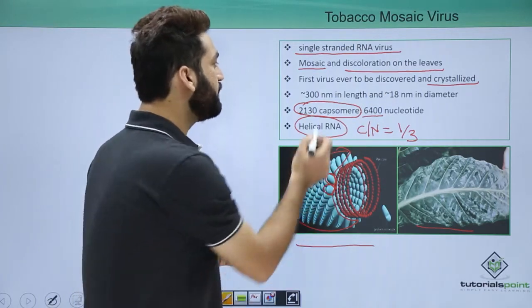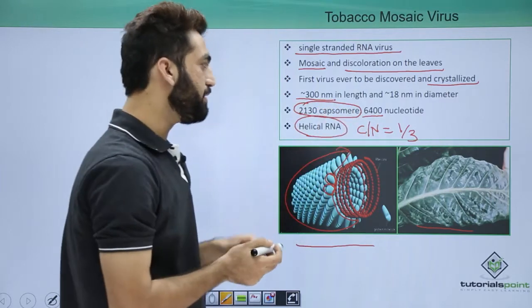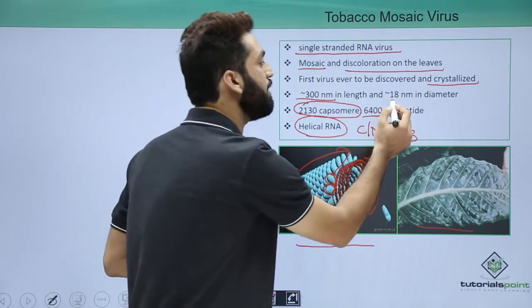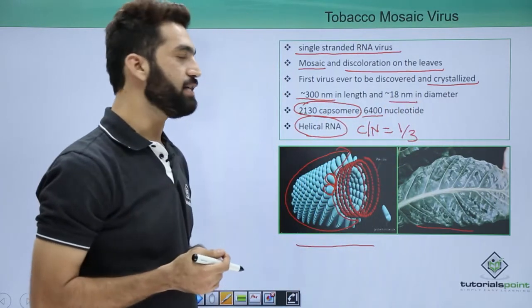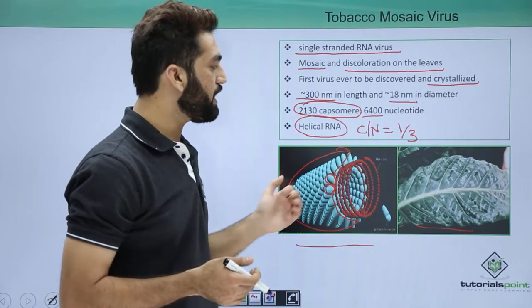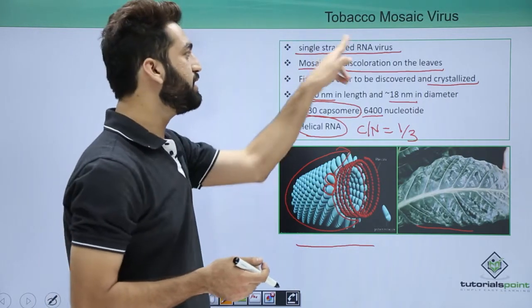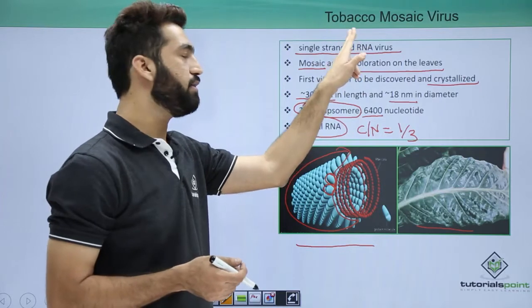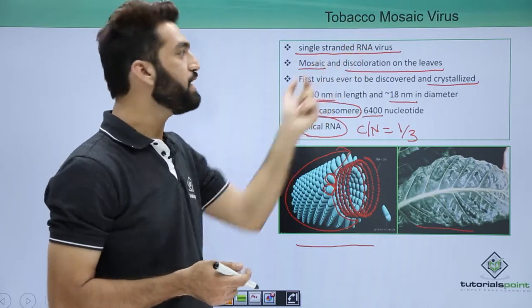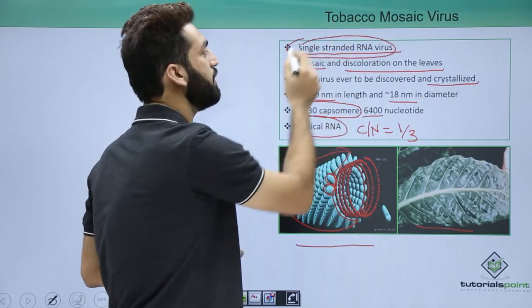When you talk about the length, the length is 300 nanometer. Remember this particular dimension. And 18 nanometer is the diameter. This is all about TMV virus, which has the genetic material. Remember the genetic material of TMV, which is single-stranded RNA virus.